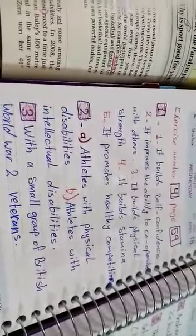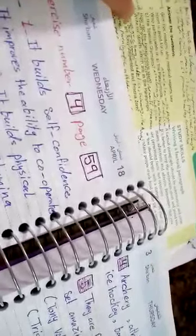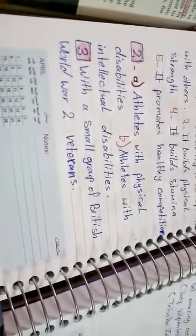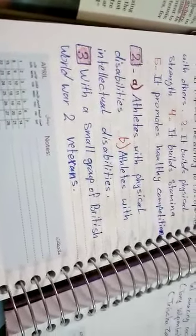Now, look at exercise number 3, please. How did the Paralympics start? With a small group of British World War II veterans.